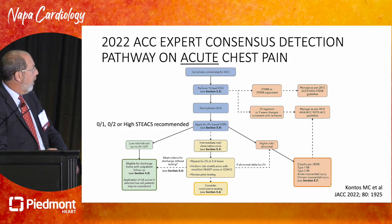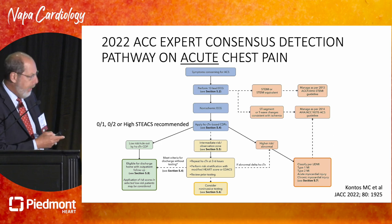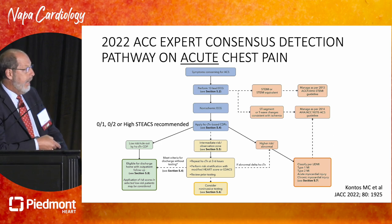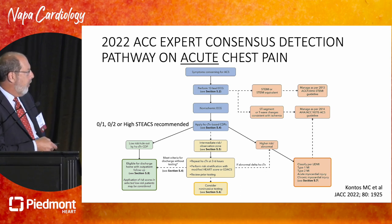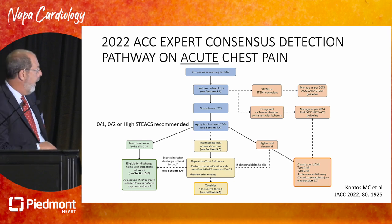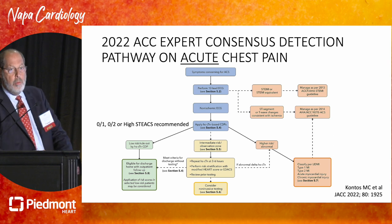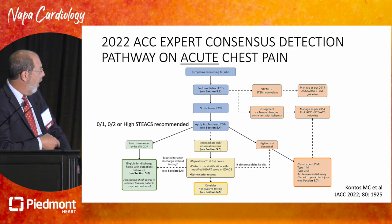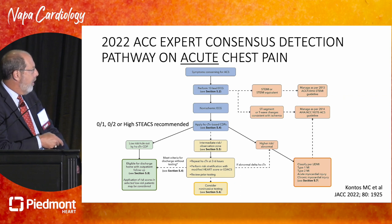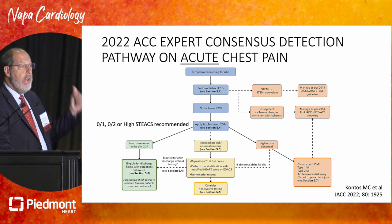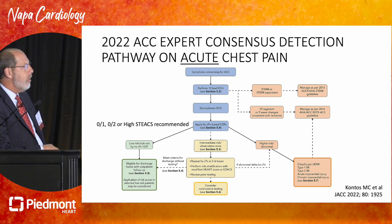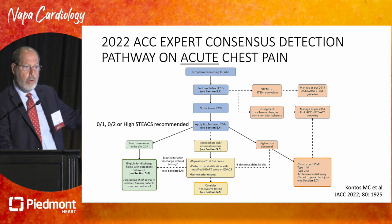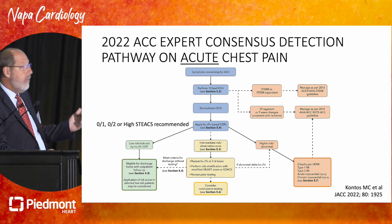The recent 2022 ACC expert consensus document on acute chest pain looks at this specifically. Assuming a non-ischemic ECG, you move down and look towards troponin assays. High-sensitivity troponin and its impact on our evaluations is now currently recommended. Based on this initial clinical assessment, ECG assessment, and troponin analysis, we can identify a group of patients at low risk eligible for early discharge. Application of risk scores — a higher HEART or EDACS score — may justify further testing, but in many cases may not.